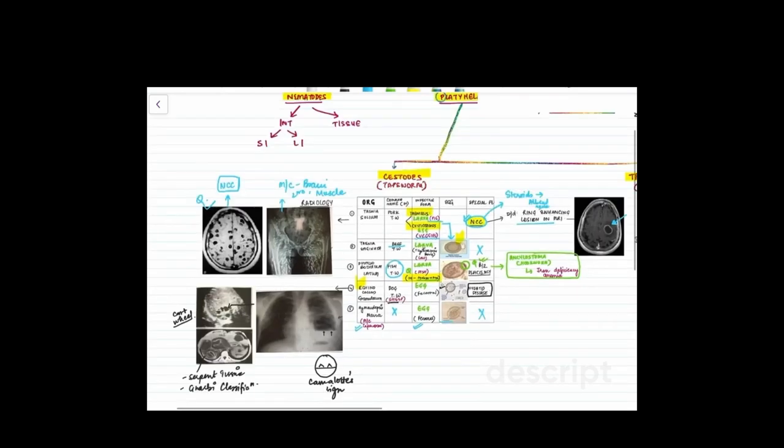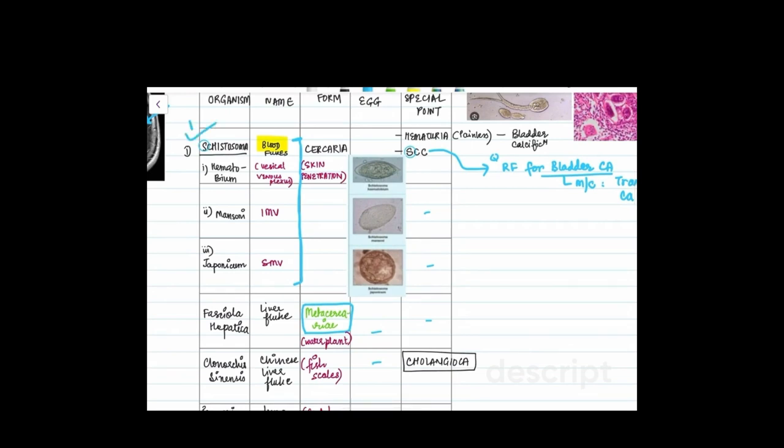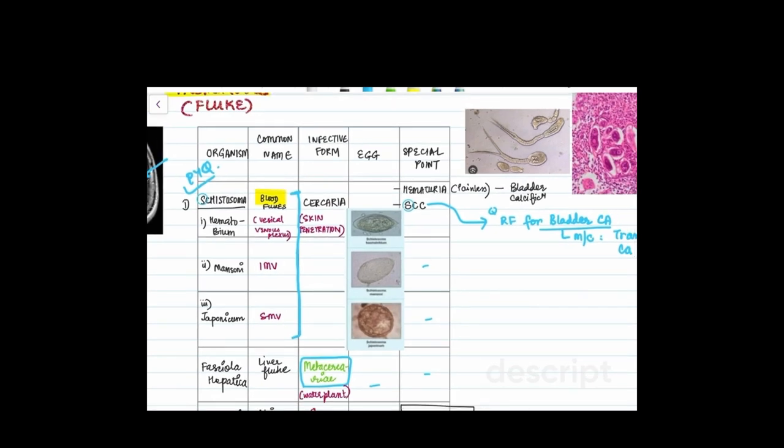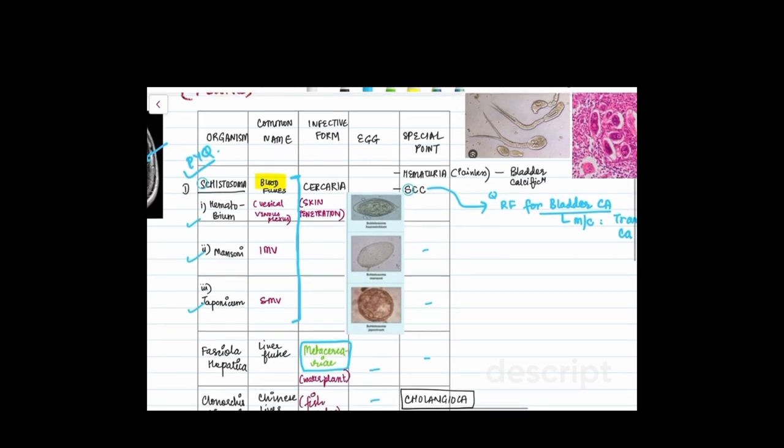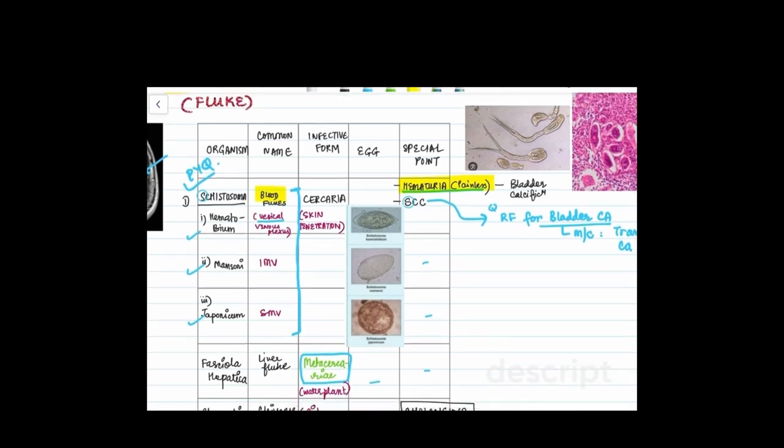Now let me talk about roughly the trematodes which are the flukes. The very important organism that we need to know which is the most frequently asked previous question is schistosoma. Schistosoma has three species: schistosoma hematobium, mansoni, and japonicum. The common name is blood flukes. Now schistosoma, as you can see in your notes that there is a life cycle, you just need to know the very important point that hematobium resides in the vesicle venous plexus. It penetrates the vesicle venous plexus and hence it causes hematuria. So a cause of painless hematuria in the clinical vignette along with a parasite is schistosoma hematobium. The infective form for all the three is cercaria and you get the infection by skin penetration.